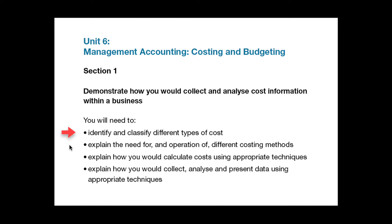For bullet point 2 you need to briefly describe the different costing methods such as job, standard, activity based, service and batch costing, and explain why and in what circumstances or types of organisation one would be selected rather than another. On the next bullet point you would need to briefly describe the different techniques used to calculate costs such as absorption, marginal and cost plus, and explain how to use each one, ideally with one actual example. Finally, you will need to describe how and in what situations you would use techniques such as sampling, break-even and cost benefit analysis.